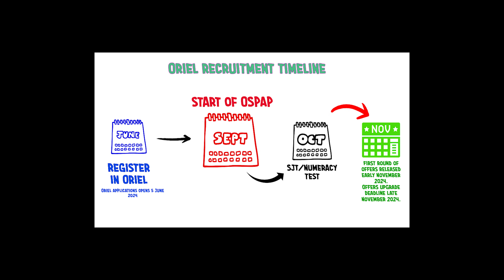From your exam results, you will be made aware of your placement location. There are three waves of placement offers. If you don't like your first-wave allotment, you can go for the second wave, and then the third wave if needed. So within just two months of arriving in the UK and starting your course, you will already know where you will be doing your foundational training placement.